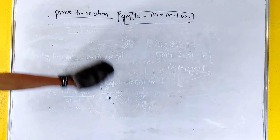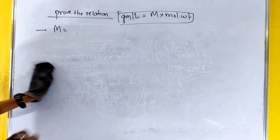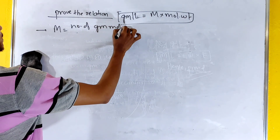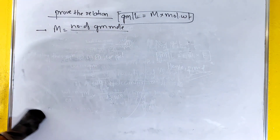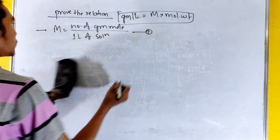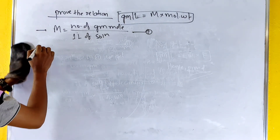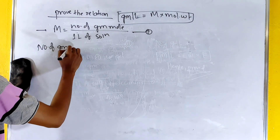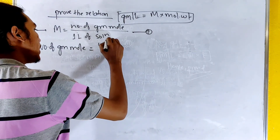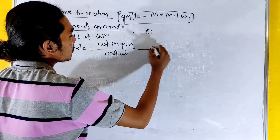The number of moles equals weight in gram divided by 1 liter of solution. The number of moles is defined as weight in gram divided by molecular weight — equation one for molarity.